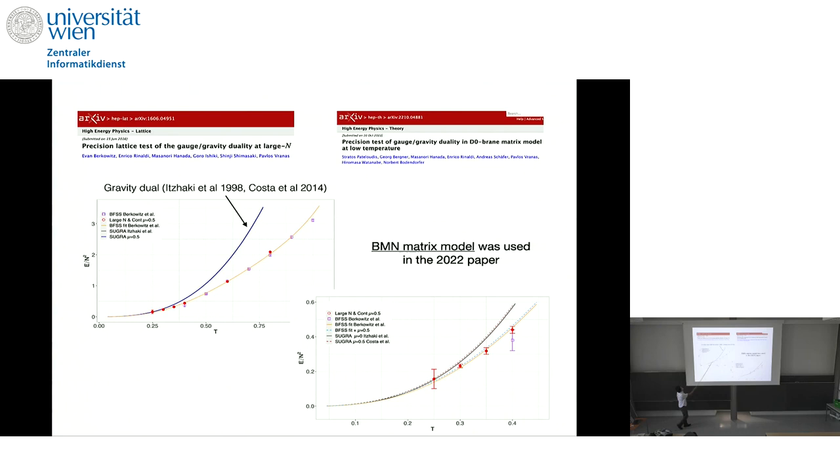So, this is a gravity dual, 7.4 times T to the 2.8. And also, that result was for BFSS model. But we can also introduce flux deformation, and we can go to BMN model, which probably David likes a lot. But if a flux parameter is very small, the correction is very small. The correction to BFSS is very small.